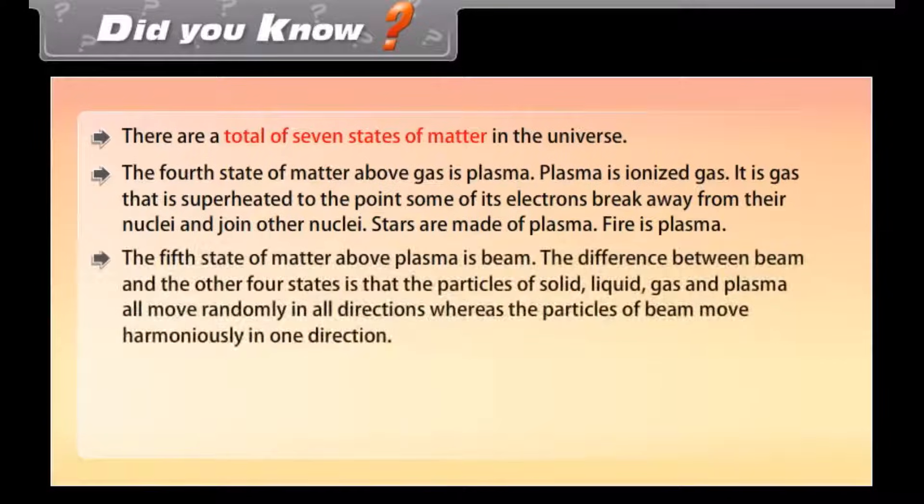The fifth state of matter above plasma is beam. The difference between beam and the other four states is that the particles of solid, liquid, gas and plasma all move randomly in all directions whereas the particles of beam move harmoniously in one direction.